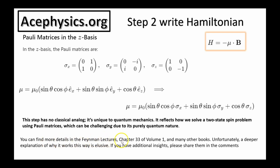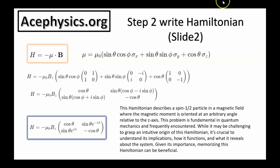Unfortunately, a deeper explanation of why it works this way is elusive — if you have additional insights, please share them in the comments below. To get the spin-one-half Hamiltonian, take the mu matrix, multiply it by B, replace sigma-x, sigma-y, and sigma-z with their respective matrices, and that gives you the Hamiltonian matrix, which simplifies to a 2×2 matrix. This Hamiltonian describes a spin-one-half particle in a magnetic field where the magnetic moment is oriented at an arbitrary angle relative to the z-axis. This problem is fundamental in quantum mechanics and frequently encountered. While it may be challenging to grasp its intuitive origin, it's crucial to understand its implications and what it reveals about the system. Memorizing this spin-one-half Hamiltonian can be beneficial.